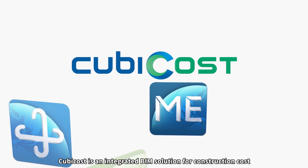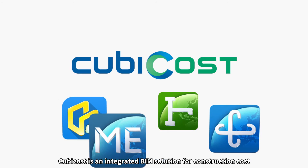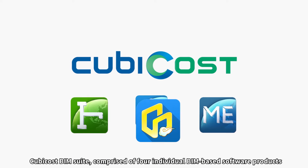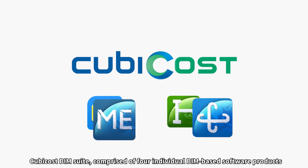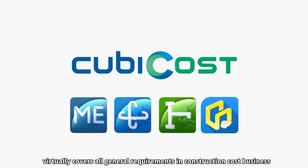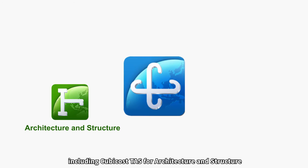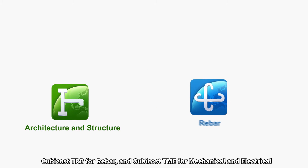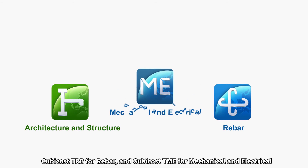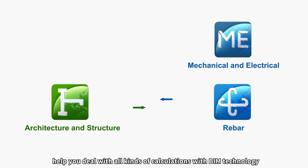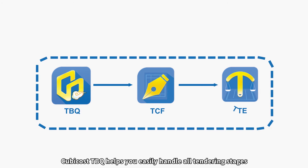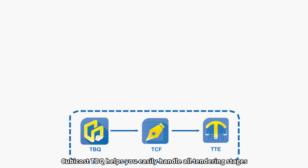Qubicost is an integrated BIM solution for construction cost. The Qubicost BIM Suite, comprised of 4 individual BIM-based software products, virtually covers all general requirements in construction cost business. Three quantity takeoff software products — Qubicost TAS for architecture and structure, Qubicost TRB for rebar, and Qubicost TME for mechanical and electrical — help you deal with all kinds of calculations with BIM technology. Collaborative cost estimation software Qubicost TBQ helps you easily handle all tendering stages.